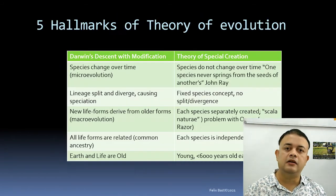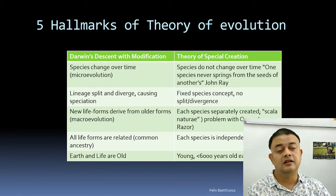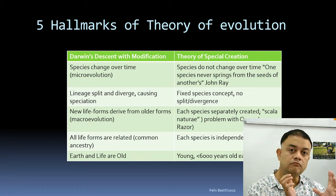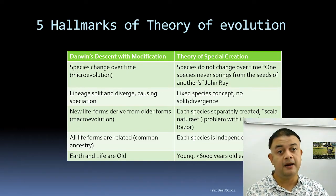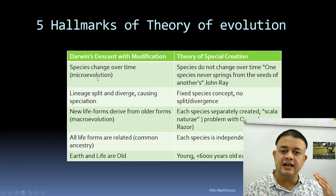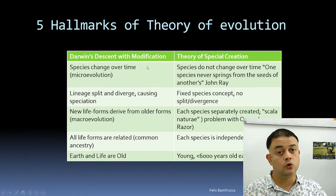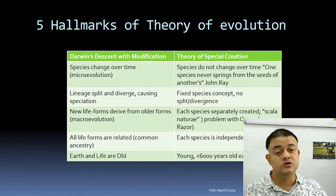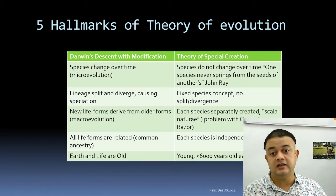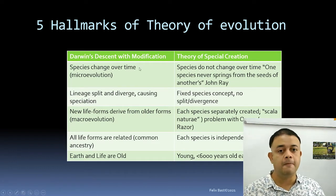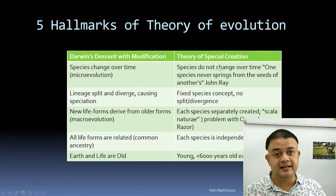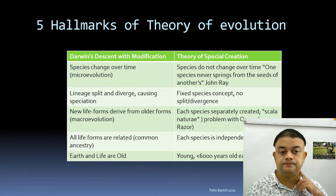Another way to understand this is to compare Darwin's five hallmarks of evolution with special creation or intelligent design. Species change over time — that is micro-evolution. Even Homo sapiens are changing, and SARS-CoV-2 causing COVID-19 is also changing within its lifetime. But for special creation, species are static and not dynamic.